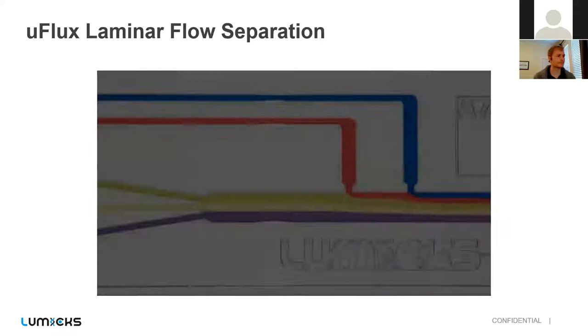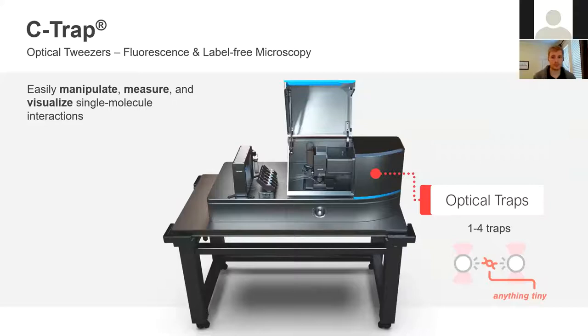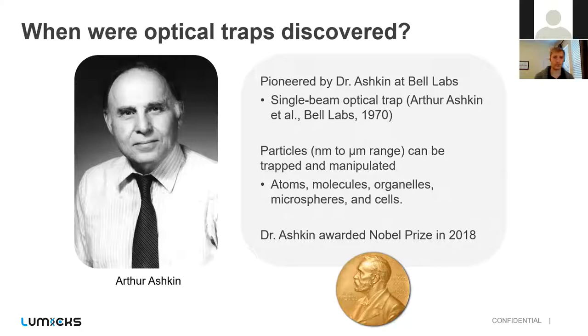Now the third component are the optical traps. Maybe you've heard of them. Maybe you haven't. I'll spend a little more time talking about what they are and how they operate, because they really are the core technology of our C-TRAP instrument. So to give you a brief historical background, optical traps were pioneered by Dr. Arthur Ashkin back in the 60s, 70s and 80s when he was a scientist at Bell Labs. I think the first paper here was published in 1970. Along with his colleagues and mentees, they demonstrated that you could trap particles such as atoms, molecules, organelles, and even cells. So things on the range of nanometers to microns. And for this work, he was actually awarded a Nobel Prize before his death in 2018.